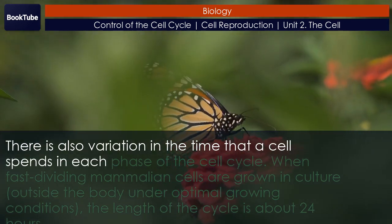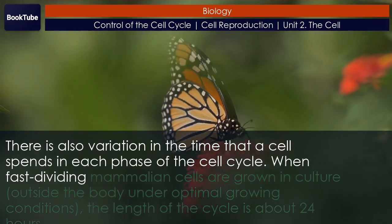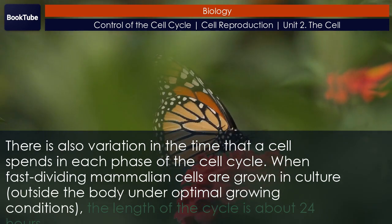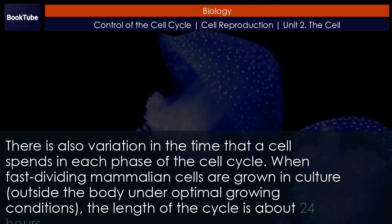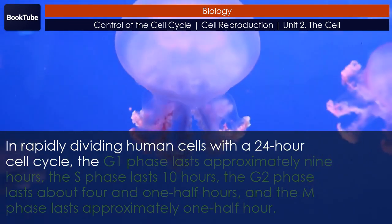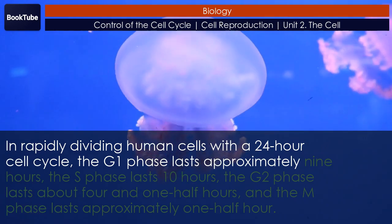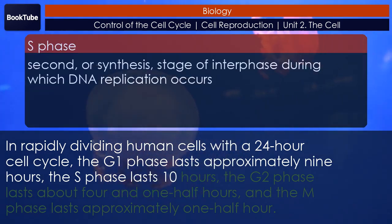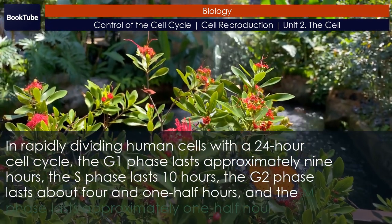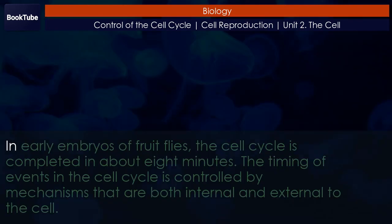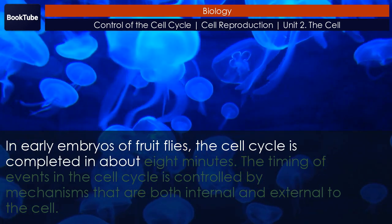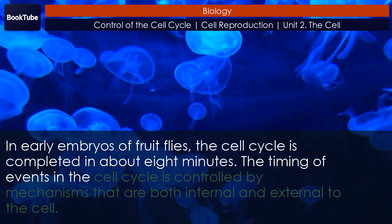There is also variation in the time a cell spends in each phase of the cell cycle. When fast-dividing mammalian cells are grown in culture under optimal conditions, the cycle is about 24 hours. In rapidly dividing human cells with a 24-hour cell cycle, G1 lasts approximately 9 hours, S phase lasts 10 hours, G2 lasts about 4.5 hours, and M phase lasts approximately 0.5 hours. In early embryos of fruit flies, the cell cycle is completed in about 8 minutes.